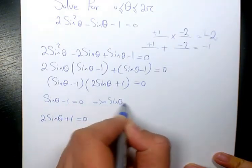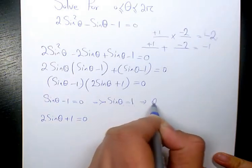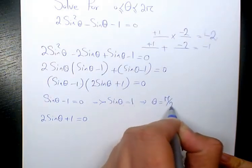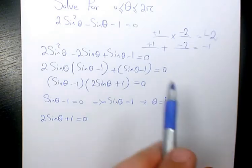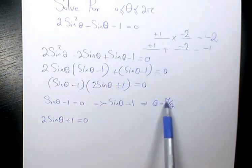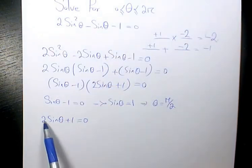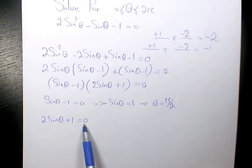So if sine theta minus 1 equals 0, sine theta will be 1. So it means that theta will be pi over 2, because sine pi over 2 is 1. So between 0 and 2 pi, we have only one answer for this question.